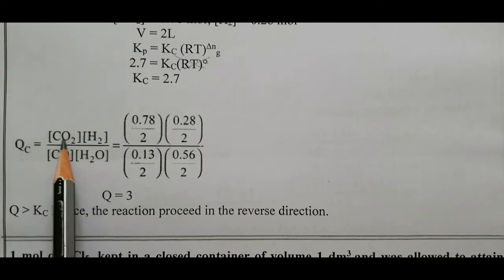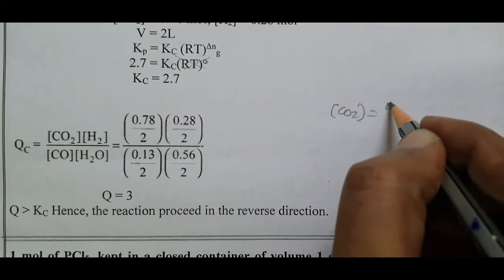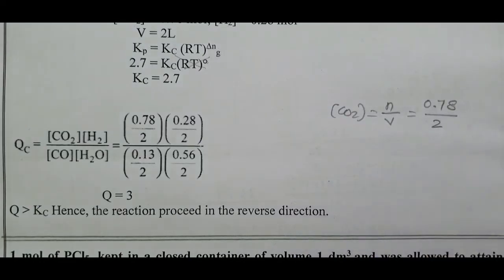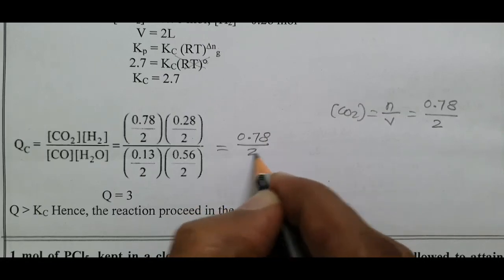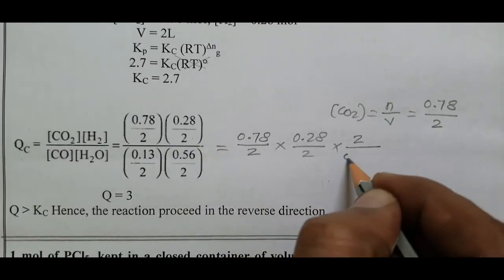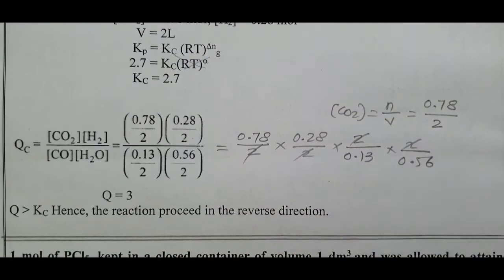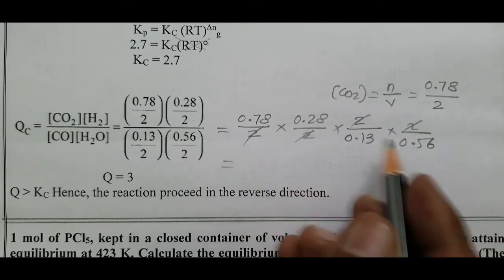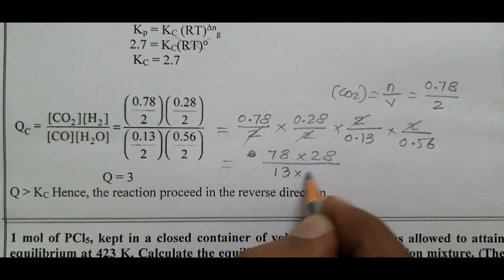The reaction quotient Q equals product concentrations divided by reactant concentrations. Concentration = moles/volume. So Q = (0.78/2)(0.28/2) divided by (0.13/2)(0.56/2). Dividing by 2 cancels in numerator and denominator, giving Q = (0.78 × 0.28) divided by (0.13 × 0.56).